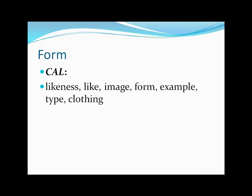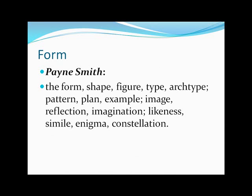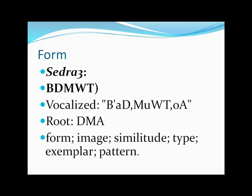The Comprehensive Aramaic Lexicon gives: likeness, like, image, form, example, type — we can take out clothing because the context knocks that one out. According to Payne Smith's Aramaic lexicon: form, shape, figure, type, archetype, pattern, example, image, reflection, imagination, likeness, simile, enigma — we can take constellation out of the picture. Schedule 3 is: form, image, similitude, type, exemplar, and pattern. If you notice, all done with outward things.